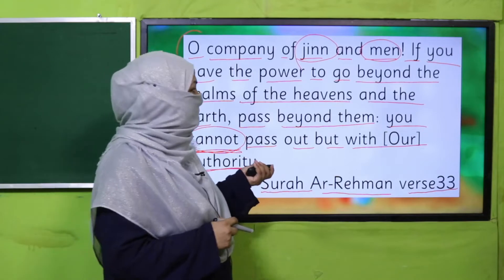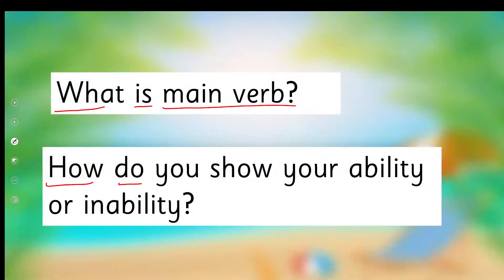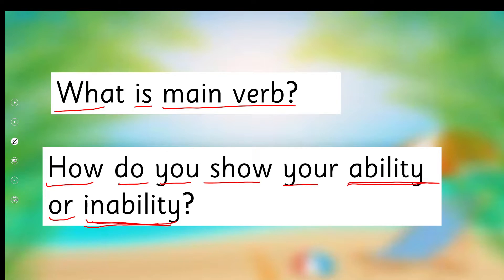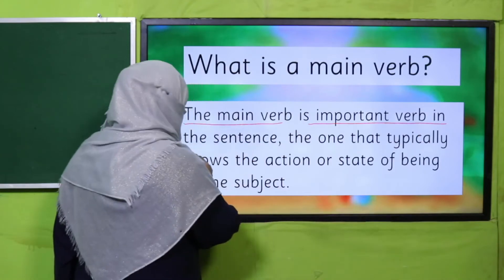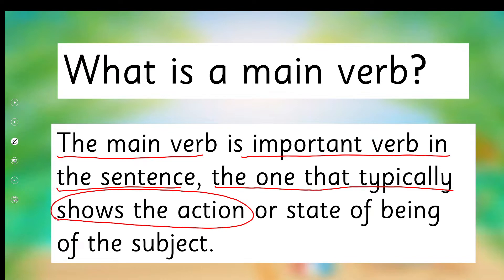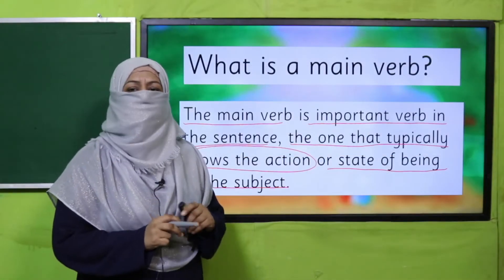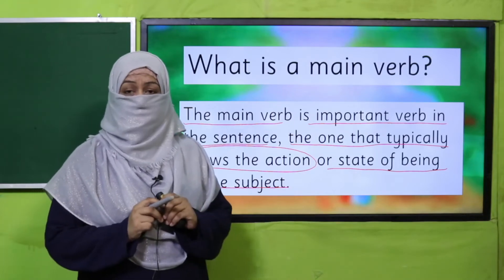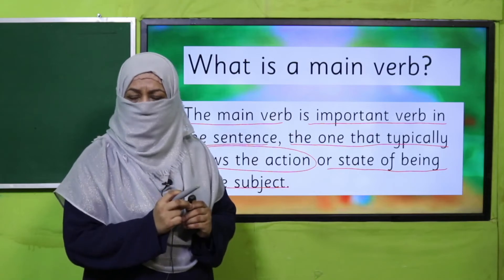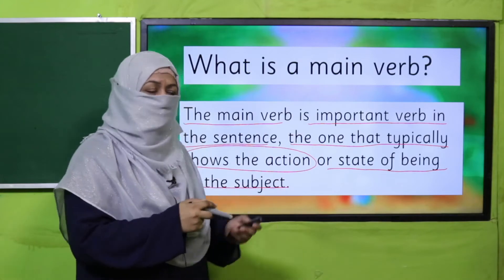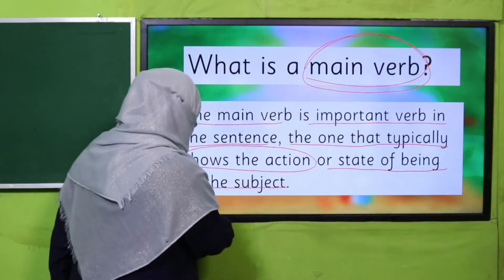In today's lecture, we are going to learn this. First, tell me: what does 'main verb' mean, and how do you show your ability or inability? Pause the video and answer these questions to your teacher. The main verb is the important verb in the sentence — the one that typically shows the action or state of being of the subject. There can be more than one verb in a sentence, but there cannot be any sentence without a verb. The main verb is the one typically showing the action.